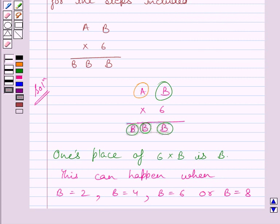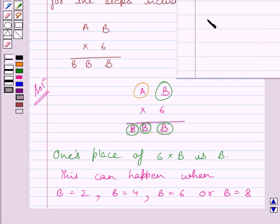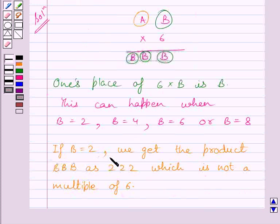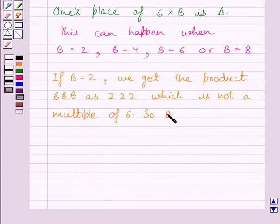Now when B is equal to 2, then the product will become 222. But 222 is not a multiple of 6. So, value of B cannot be 2. Now we can write, if B is equal to 2, we get the product BBB as 222, which is not a multiple of 6. So, B cannot be equal to 2.